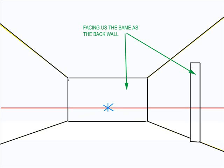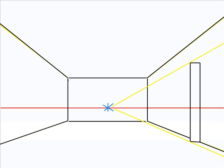It is facing us the same way as the back wall and it is at right angles to the side wall. Now I line up the top and bottom of it to the vanishing point. Now I have drawn the front of the bookcase.